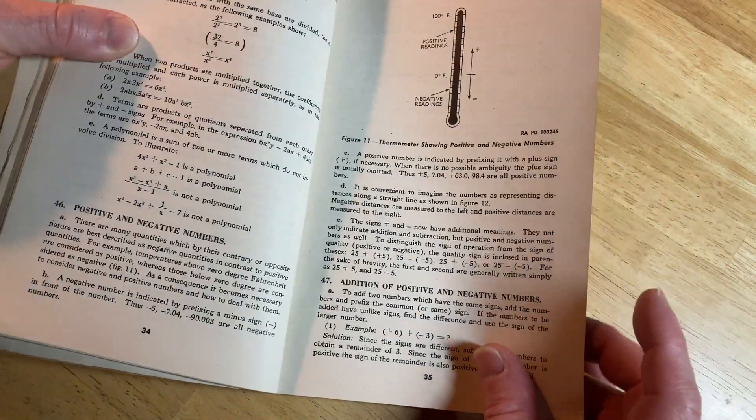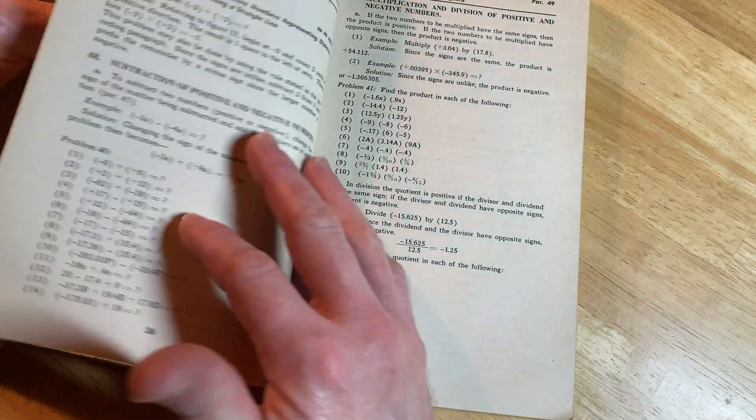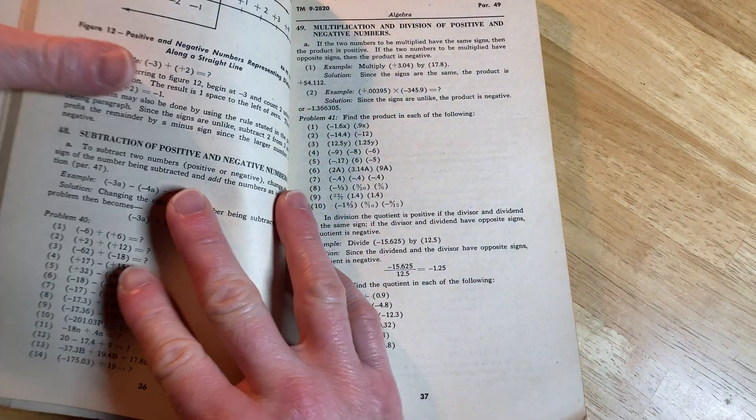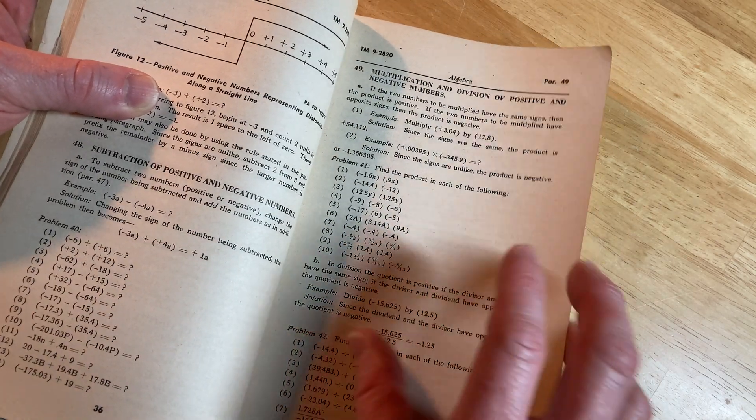Positive and negative numbers. Addition of positive and negative numbers. And subtraction of positive and negative numbers. Really basic mathematics. And this is shop mathematics. Multiplication and division of positive and negative numbers.